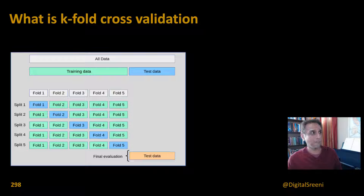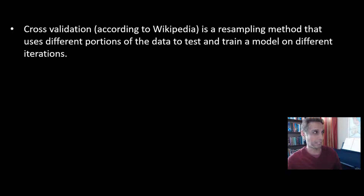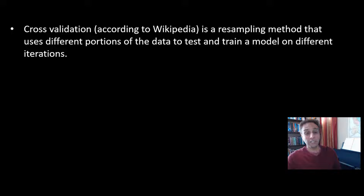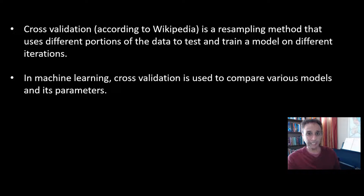On screen you can see a quick summary of K-fold cross-validation. Starting with cross-validation itself — this definition is from Wikipedia — it's a resampling method that uses different portions of your data to train and test a model on different iterations. So if you have 100,000 data points and split them the typical way, you train on some and test on others, but how sure are you the model works on other splits of your data? That's the essence of cross-validation.